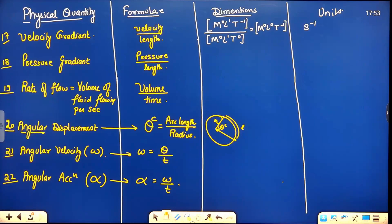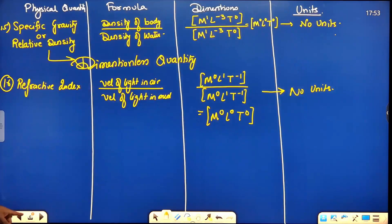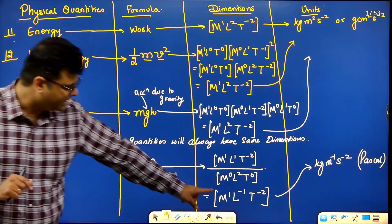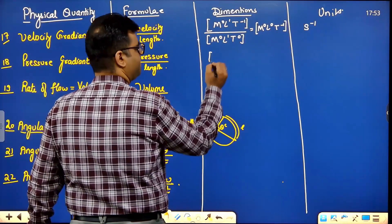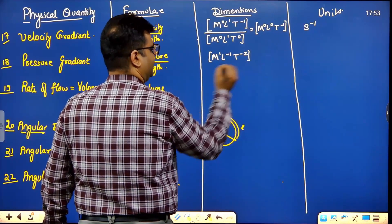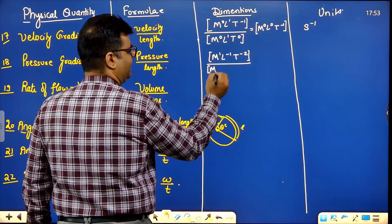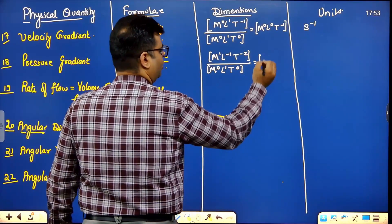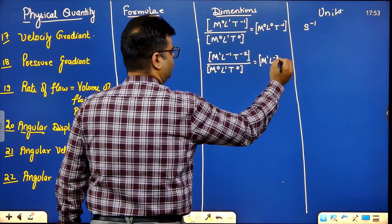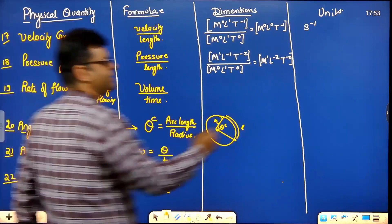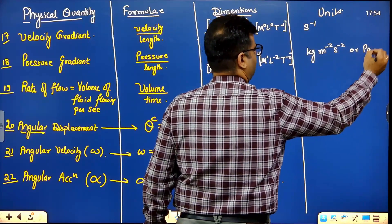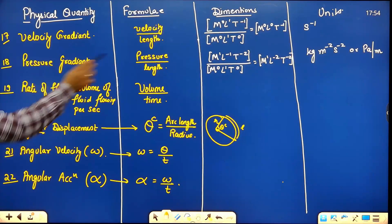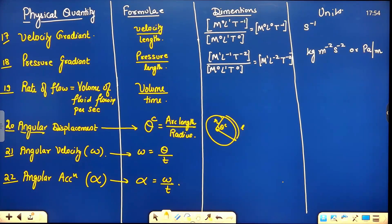Pressure gradient means pressure upon length. Pressure dimensions from last class: M¹L⁻¹T⁻². Length is M⁰L¹T⁰. Dividing: M¹L⁻²T⁻². Units are kg·m⁻²·s⁻², or equivalently pascal per meter.